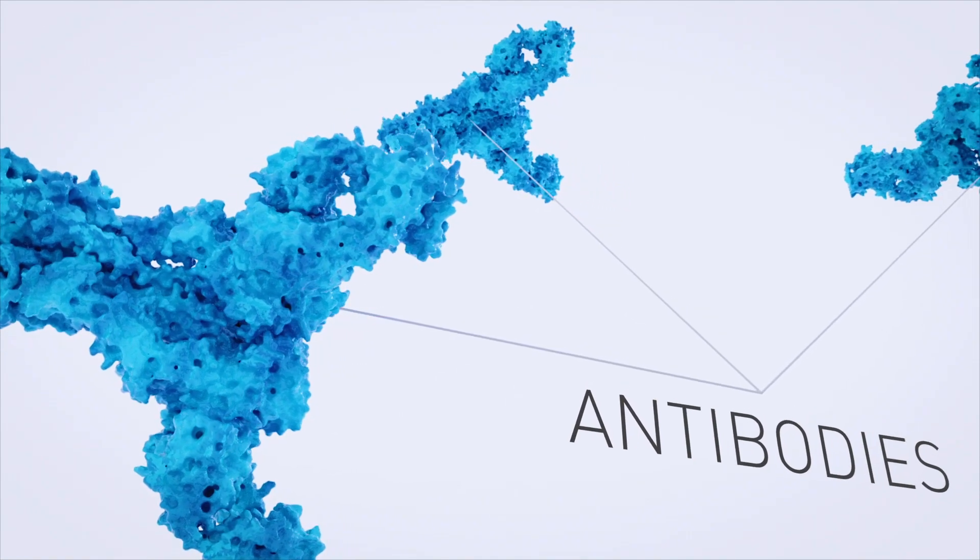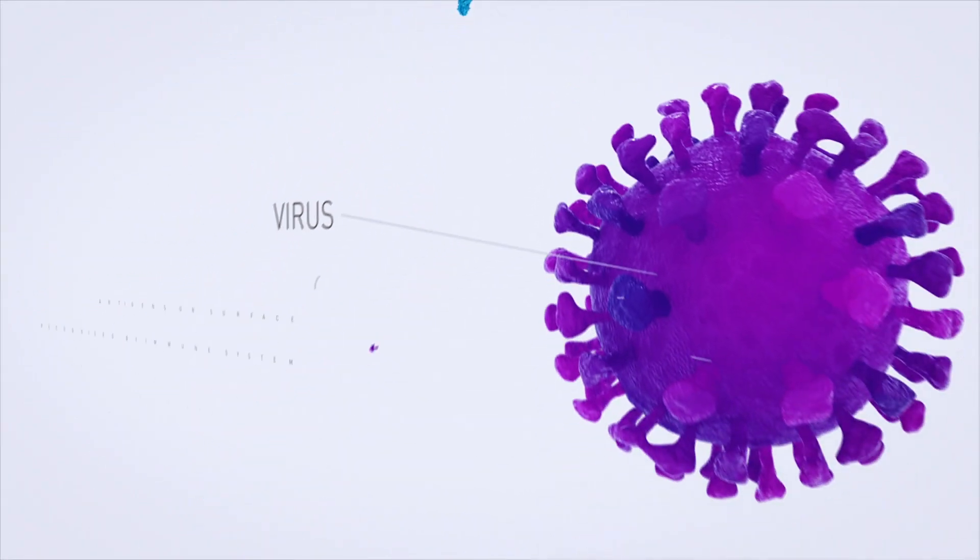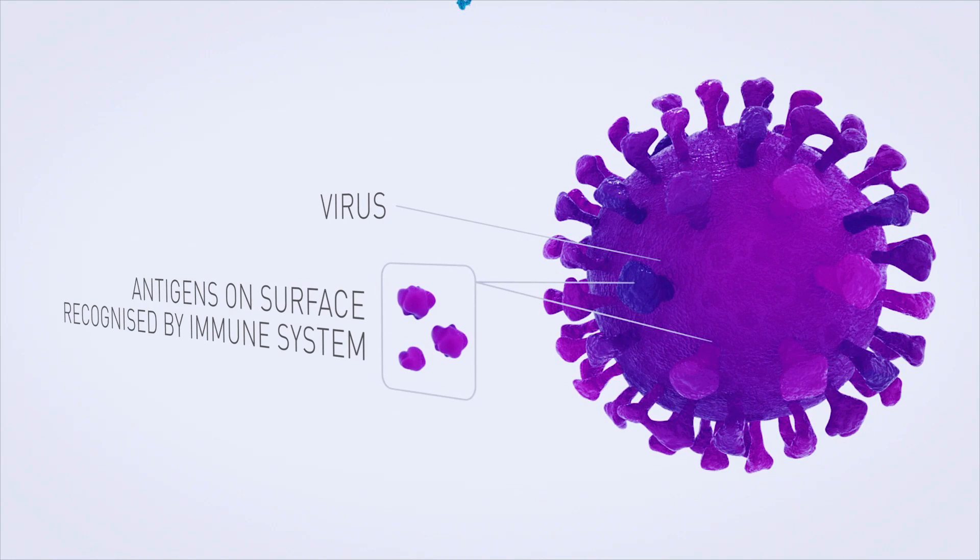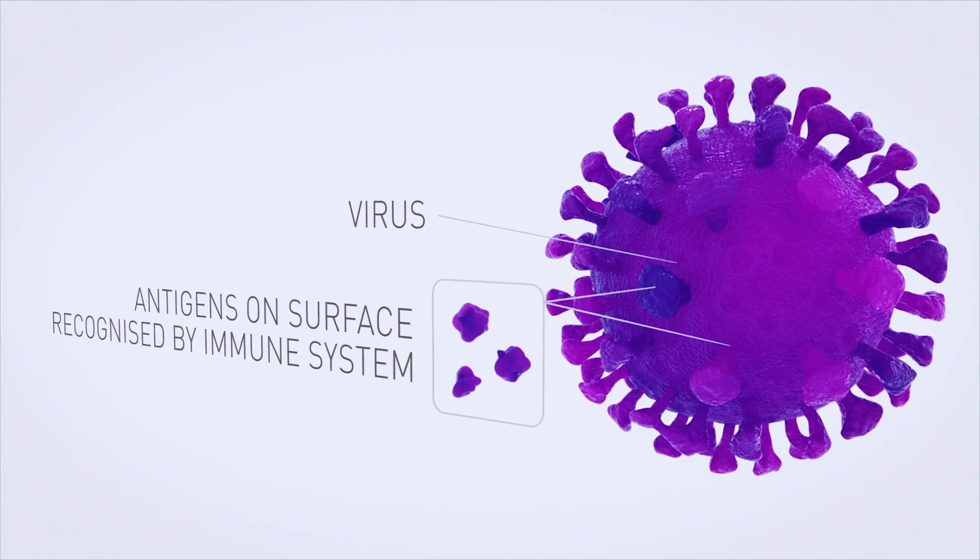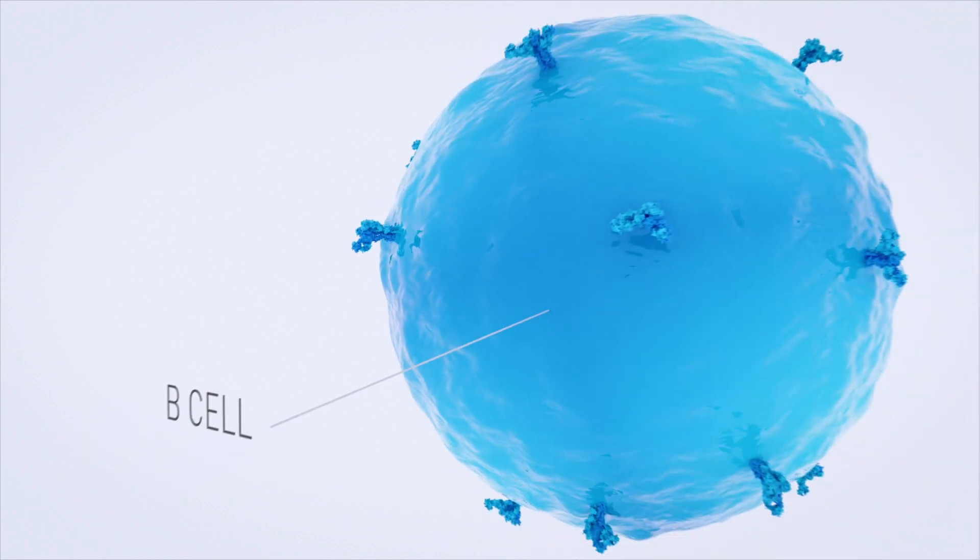Antibodies are Y-shaped proteins which recognize other proteins called antigens. Antigens are molecular structures that may be present on the surface of a pathogen, such as a virus, which triggers an immune system response when it enters the body.